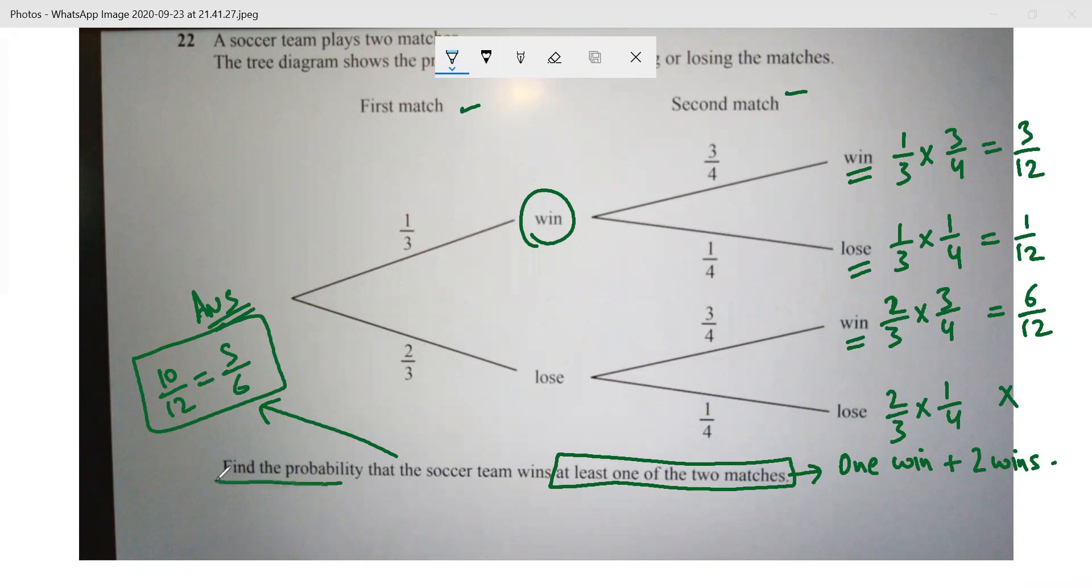Find the probability that the soccer team wins at least one of the two matches. There are two very fundamental things that you need to understand. One is that whatever probability you are getting, the maximum value of the probability can be one. So if you are getting an answer of probability like two or 37, that will be incorrect.